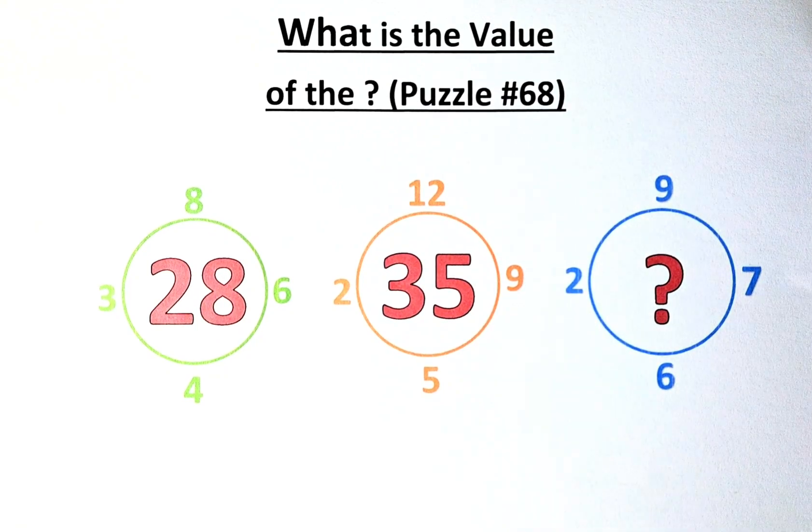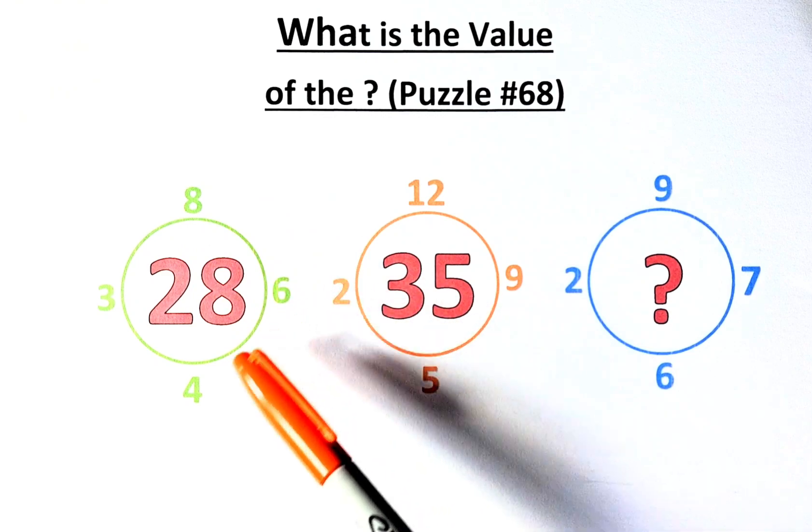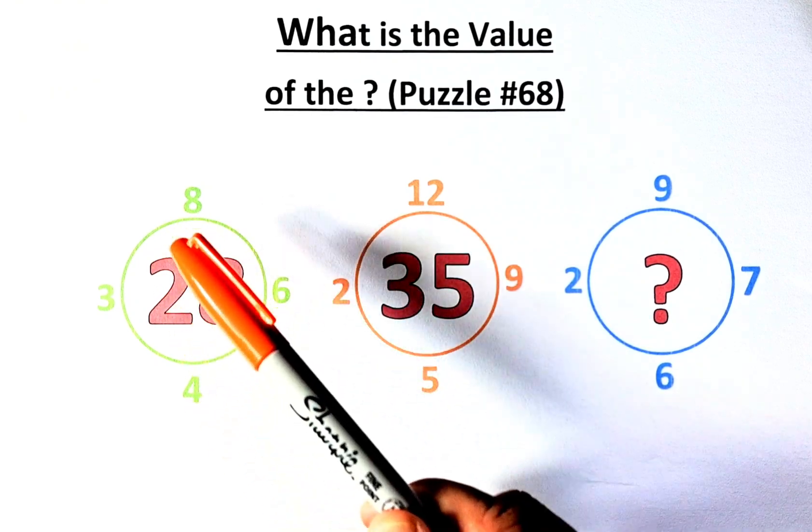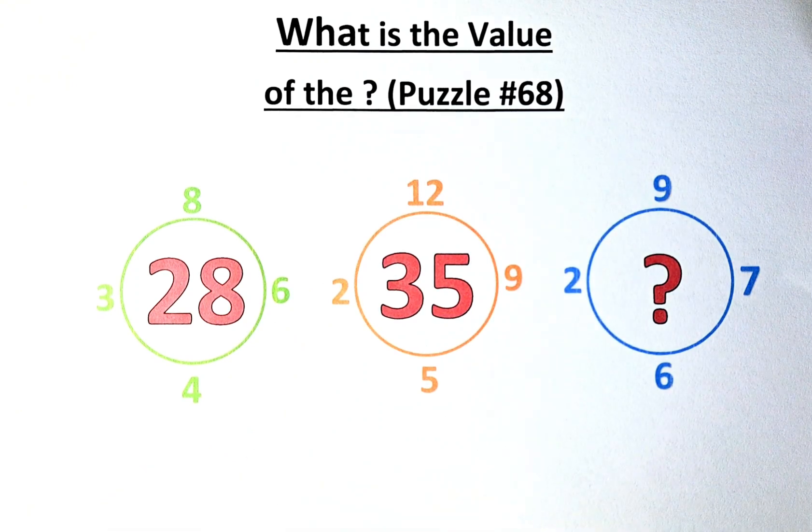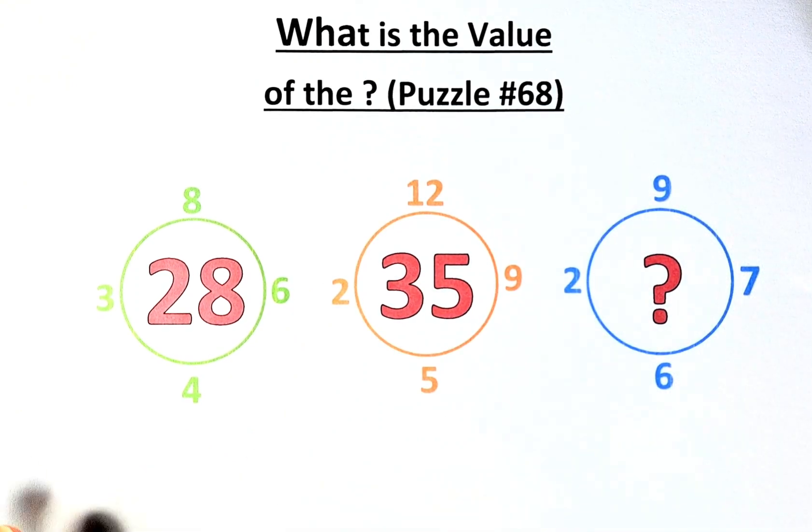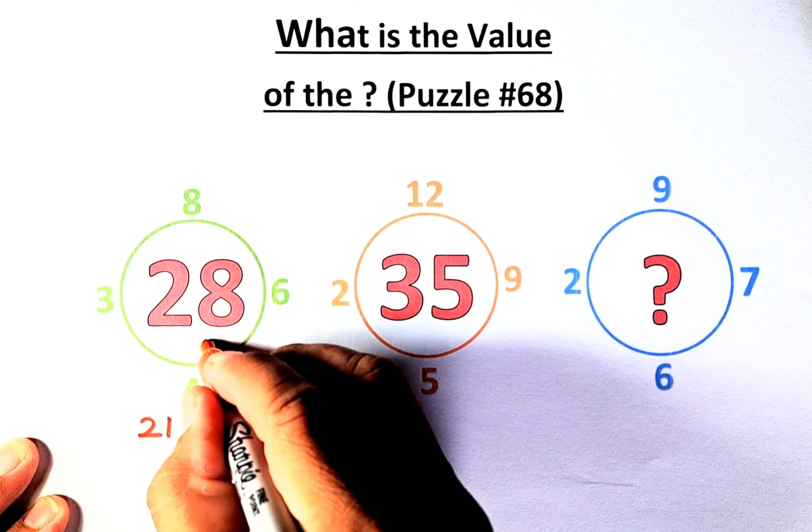We have to do a multiplication around the circle. So we need to add 3, 8, 6, 4. 3, 8, 6, 4 is 21 because this is 11, this is 10. So that is 21. And you need to do simple mathematics. You need to add 7 to the answer to get 28.